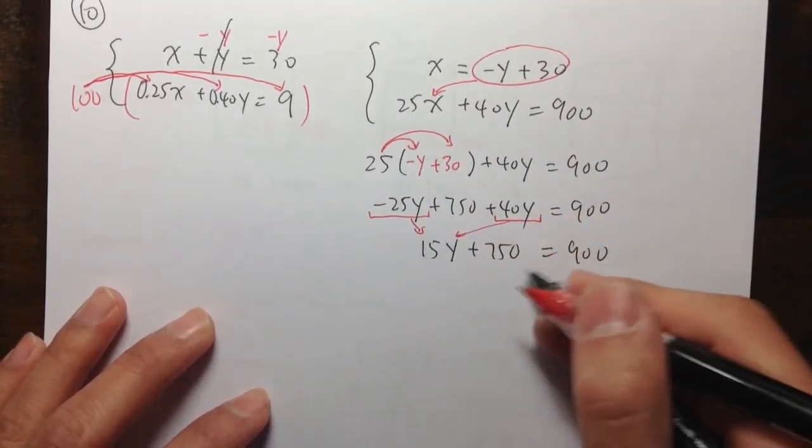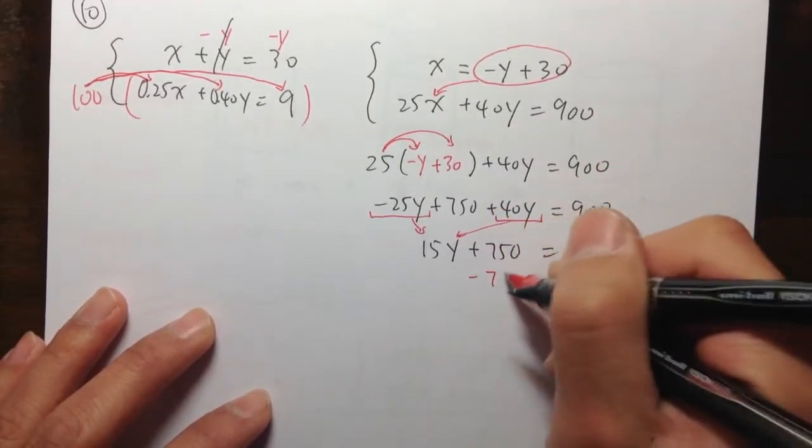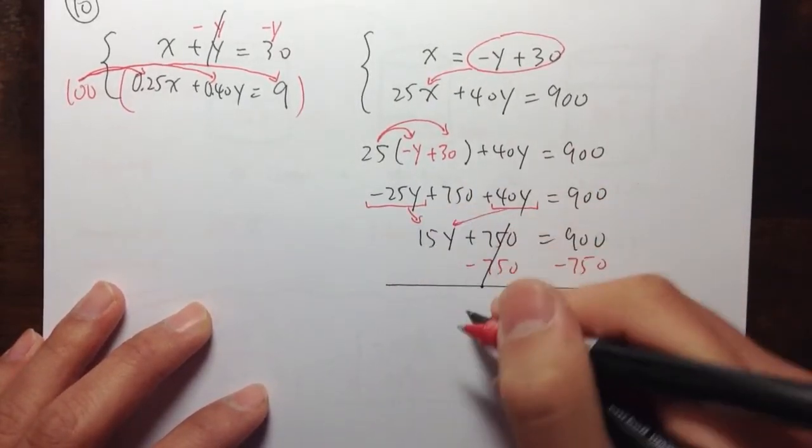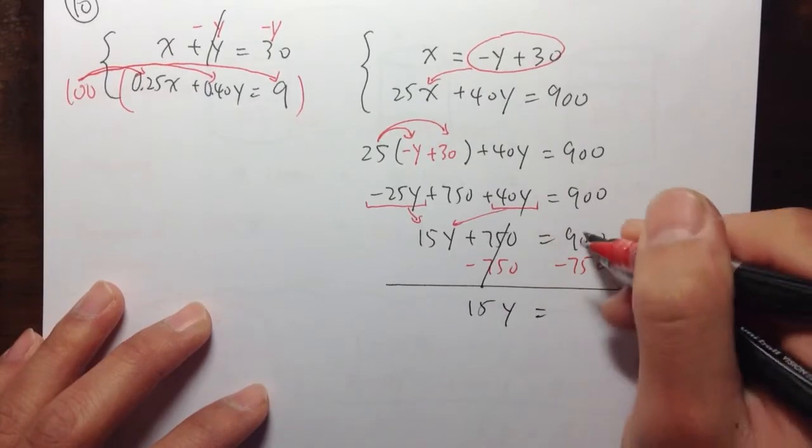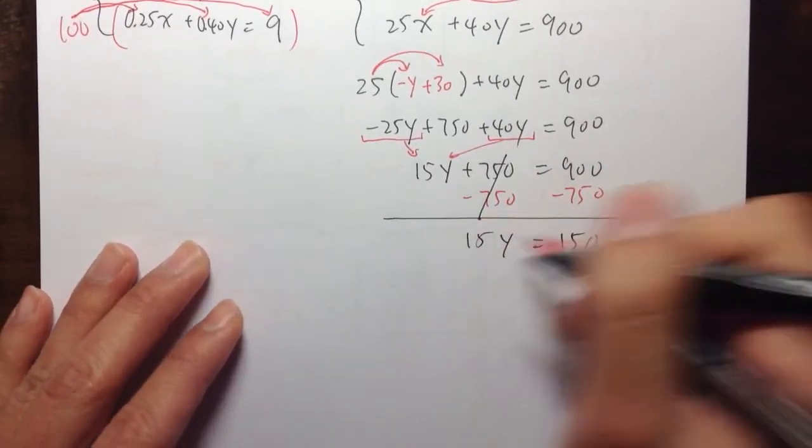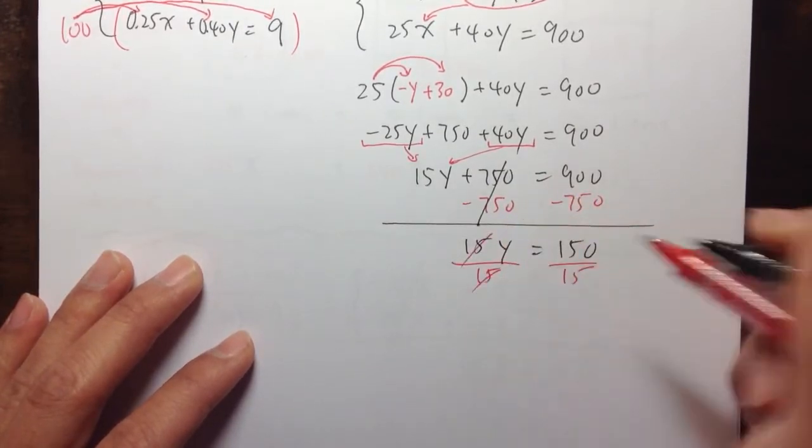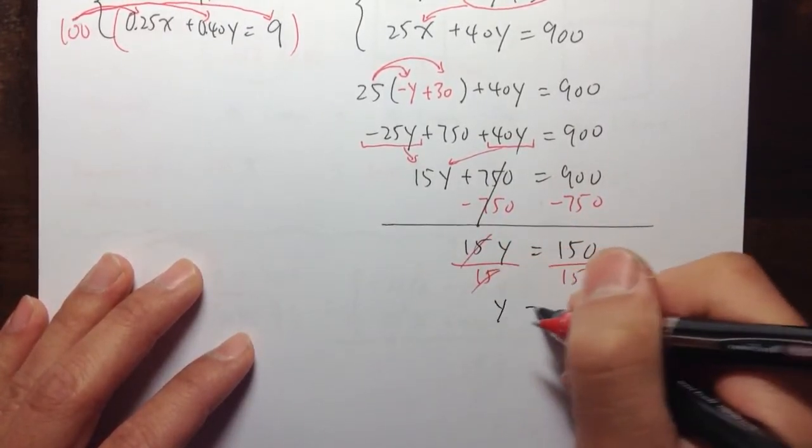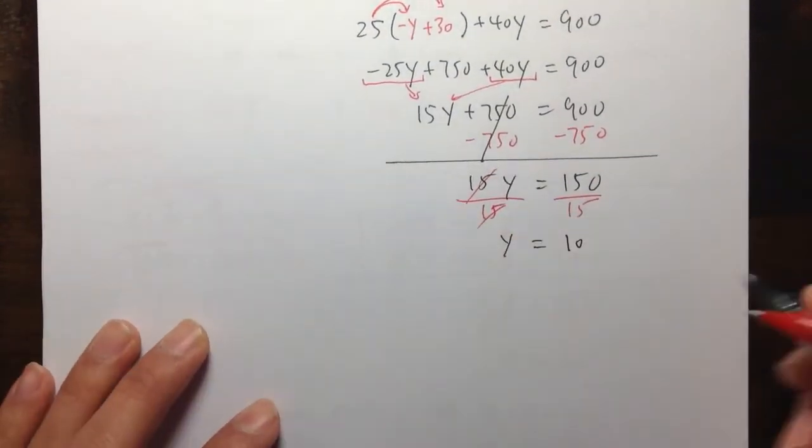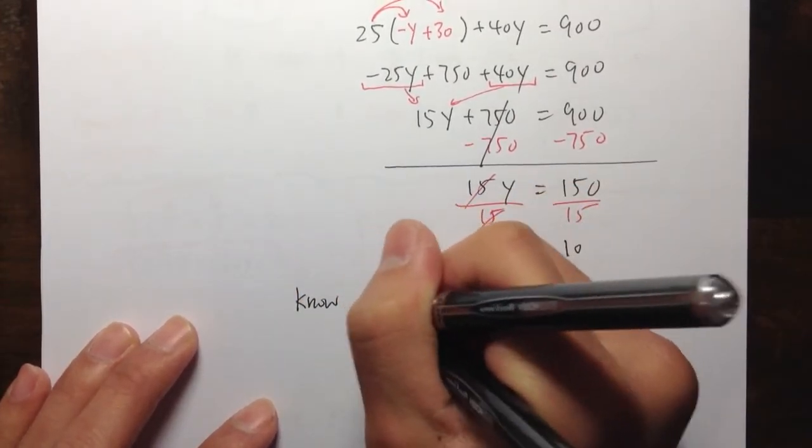And now, 15y plus 750 is equal to 900. I'm going to work with the number. Minus 750 on both sides. These two cancels, and I get 15y equals to 150. And then, 15 times y is equal to 150. I'm going to divide both sides by 15. Then, I will get y is equal to a nice number 10.